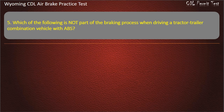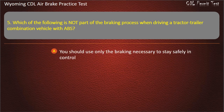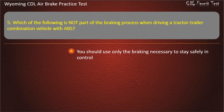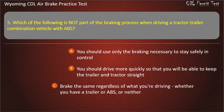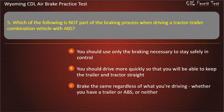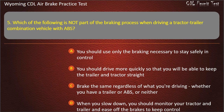Question 5. Which of the following is not part of the braking process when driving a tractor-trailer combination vehicle with ABS? You should use only the braking necessary to stay safely in control. You should drive more quickly so that you will be able to keep the trailer and tractor straight. Brake the same regardless of what you're driving, whether you have ABS or neither. When you slow down, you should monitor your tractor and trailer and ease off the brakes to keep control. Answer: You should drive more quickly so that you will be able to keep the trailer and tractor straight.